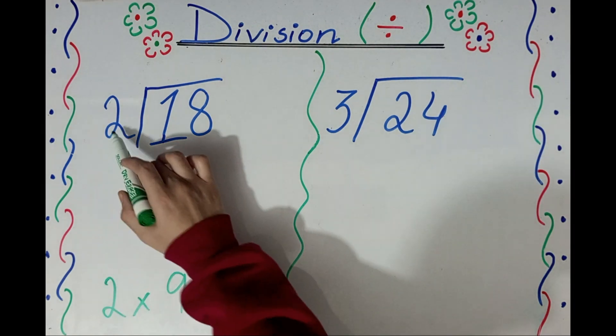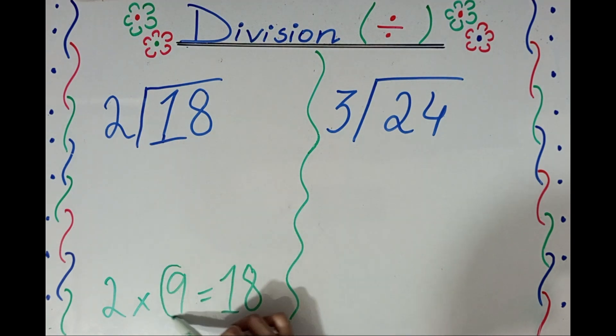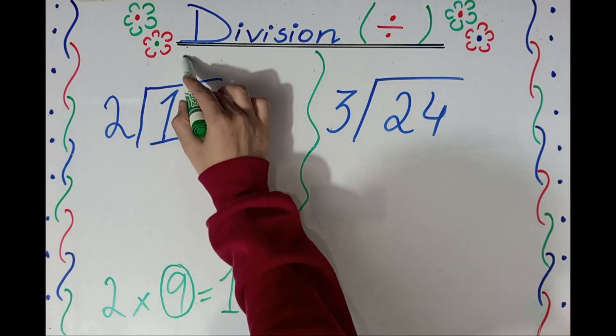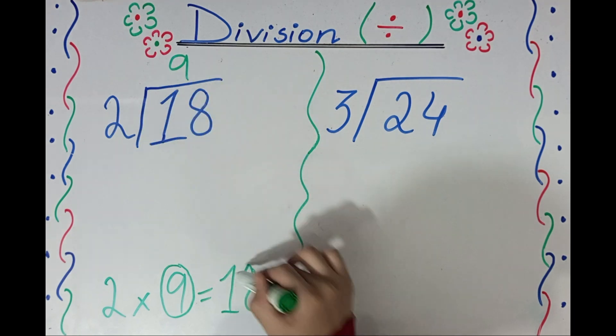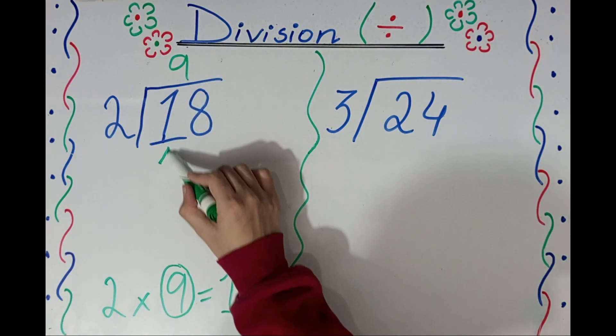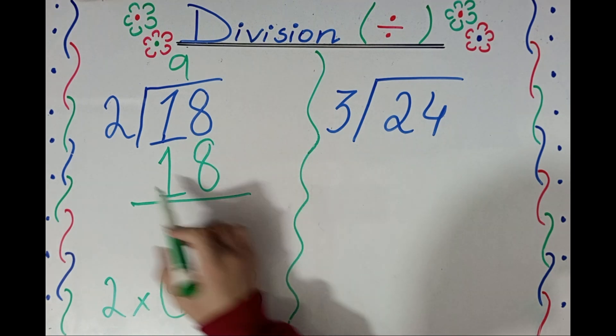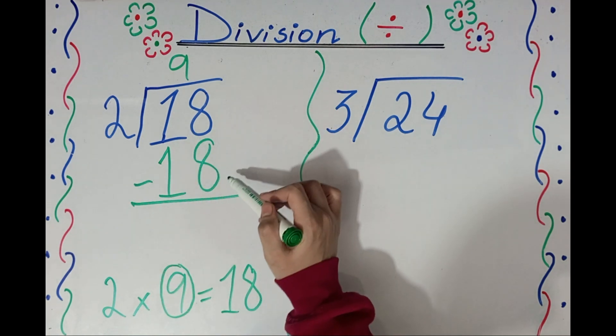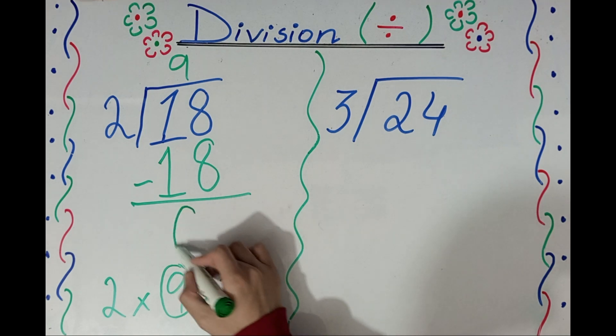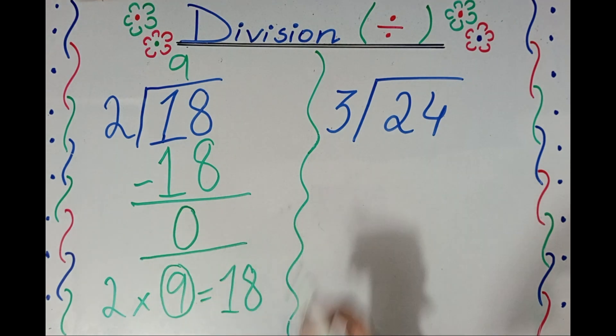So here we can have 2 over here. Where is the center mark? Where is the line? 2 nines, we will go to the last mark. 2 nines is 18. Now what do we do? Minus.